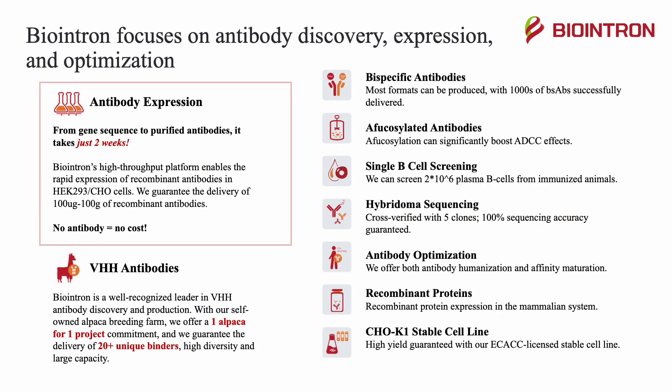BioNTron focuses on antibody discovery, expression, and optimization. Our featured service is antibody expression — from gene sequence to purified antibodies in just two weeks. Our high-throughput platform enables rapid expression of recombinant antibodies in HEK293 or CHO cells, and we guarantee delivery of 100 micrograms to 100 grams of recombinant antibodies. No antibody means no cost. For VHH antibodies, we are a recognized leader in antibody discovery and production, with our self-owned alpaca breeding farm offering a one-alpaca-per-project commitment, guaranteeing 20-plus unique binders, high diversity, and large capacity. We also offer bispecific antibodies, afucosylated antibodies, single B-cell screening, hybridoma sequencing, antibody optimization, recombinant proteins, and CHOK1 stable cell lines.